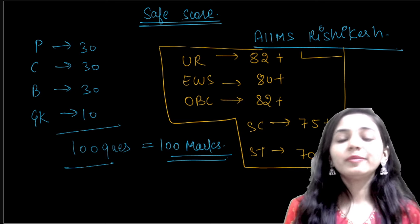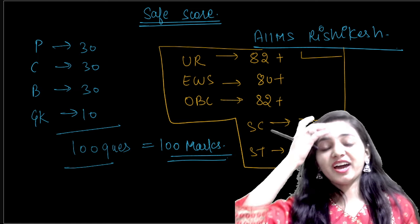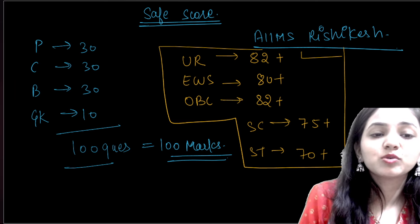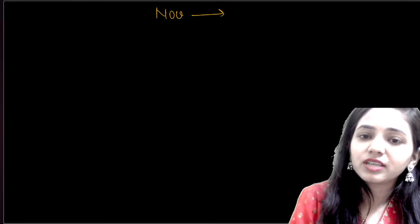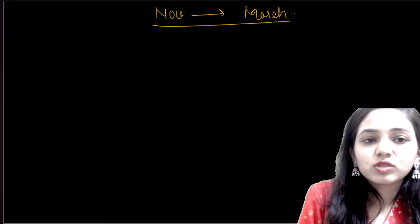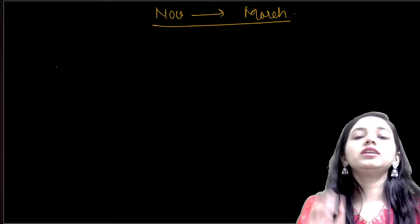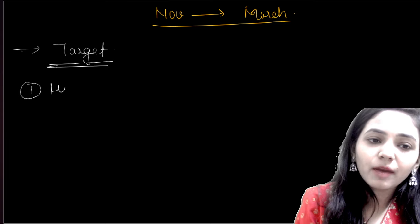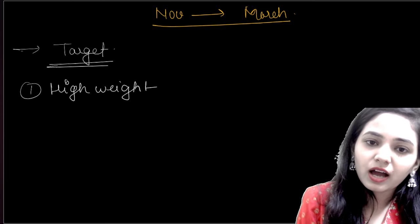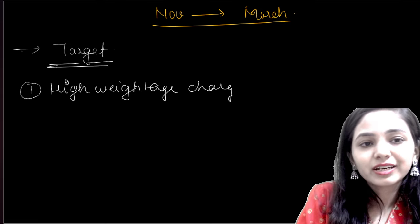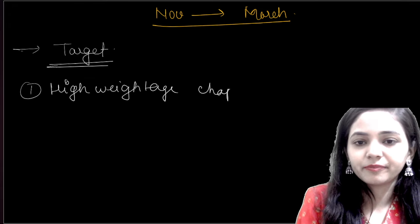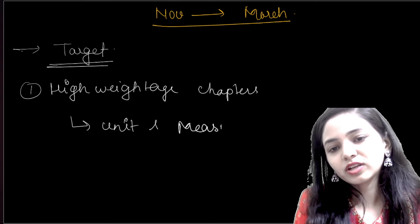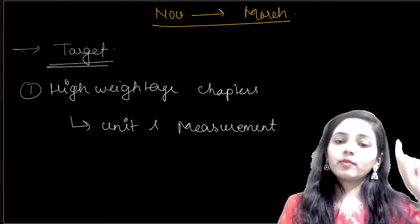Now, it's almost November and our preparation is zero. If we want to start from zero, how to study it and how to target it? If you want to complete your syllabus from November to March, you have one thing: you have to set your target. The first option is to target high-weightage chapters. I am taking an example. If there are two questions from units and measurements, what should be my approach?